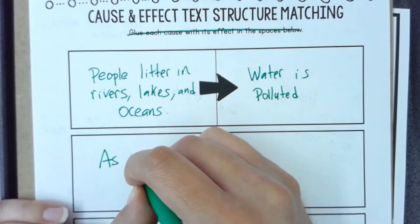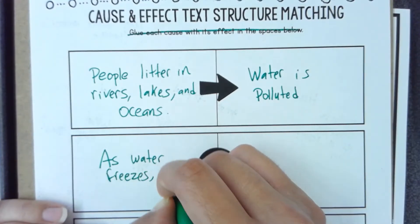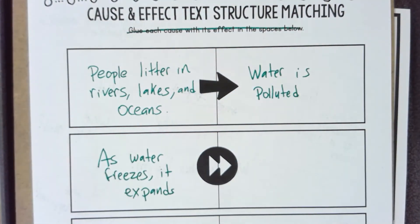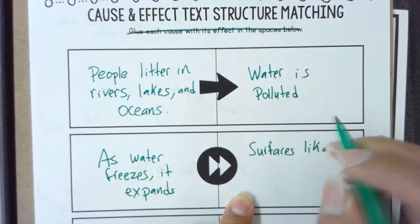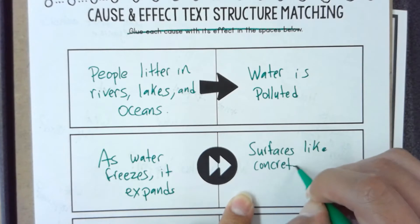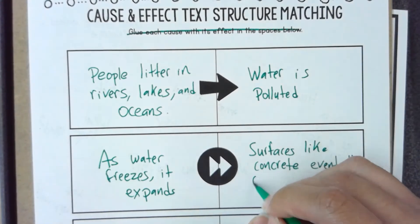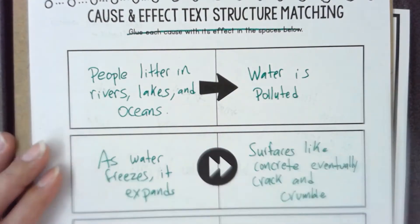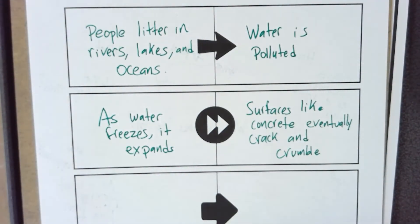Let's write our next cause: as water freezes, it expands. Now let's come up with the effect — what happens? Surfaces like concrete eventually will crack and crumble. So because the water is freezing and expanding, surfaces like concrete eventually crack and crumble.